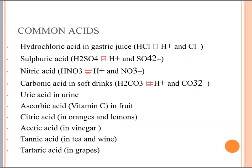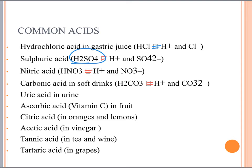Here are some common acids. We've got hydrochloric acid (HCl), sulfuric acid (H2SO4) — which is a hydrogen ion and sulfate — nitric acid (HNO3) — hydrogen ion and nitrate — carbonic acid (H2CO3) — hydrogen and carbonate — uric acid in urine, which are ammonia-ammonium-based compounds. Also sorbic acid, citric acid, acetic acid, tannic acid in tea and wines, and tartaric acid in grapes. Just remember a few of those.